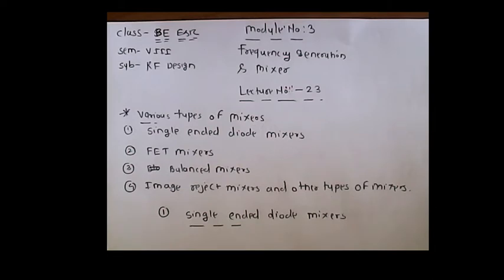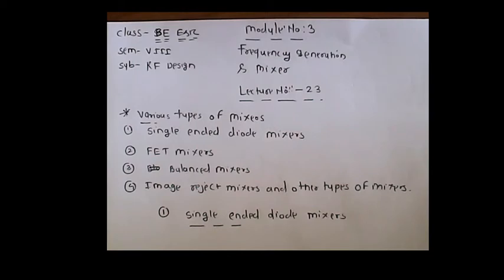In the previous lecture, we defined a mixer as a three-port network in which we generate various frequency ranges with their harmonic products. A mixer takes input from two ports and produces output at one port. We also saw the characteristics of the mixer, such as up conversion, down conversion, conversion loss, noise figure in double sideband and single sideband.